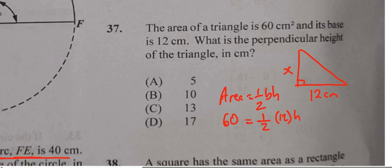Now we can work this out. 60 is equal to, well half of 12 is 6. That's 6h.